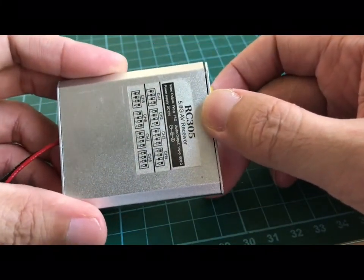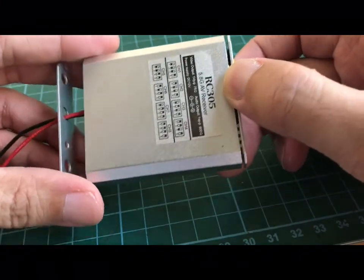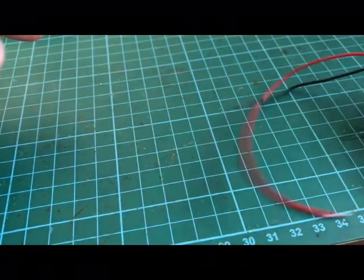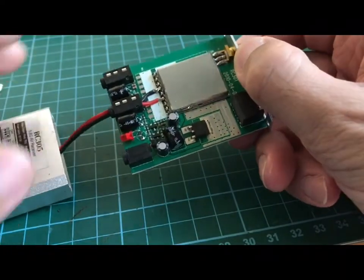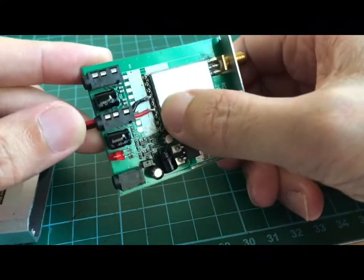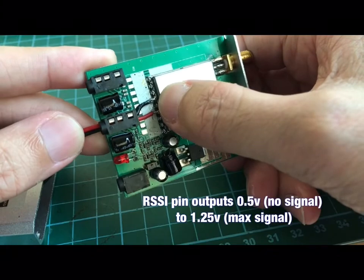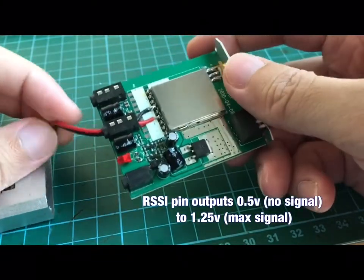This is the cheapest receiver with RSSI pin output that I can find - it costs about 18 USD. Here I have already hooked up the RSSI to this pin over here and the other one is the ground. This will allow it to output the receive signal strength to the APM.